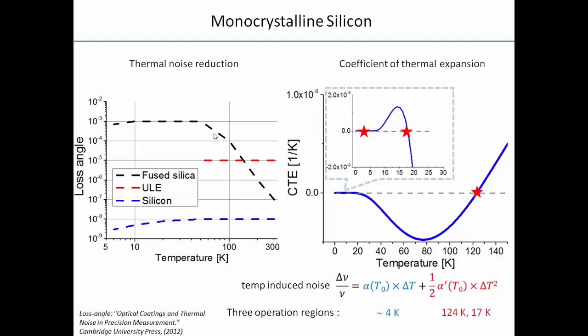Another big feature is the coefficient of thermal expansion of silicon. Silicon has to be cooled down if you want to use the material to make the cavity. There are a couple of operating points we can try: either 124 Kelvin or 17 Kelvin, where the CTE crosses zero and the first-order temperature noise contribution to the total noise budget is eliminated. Below 4 Kelvin is another interesting point where the zeroth-order term dominates. Whatever the case, we have to cool down the silicon cavity.